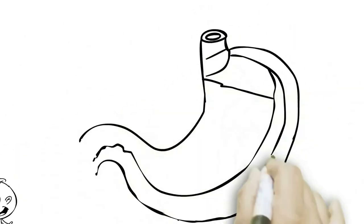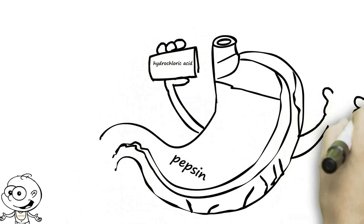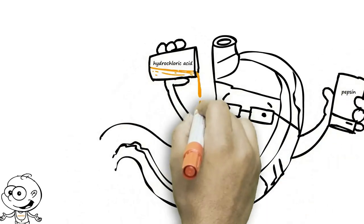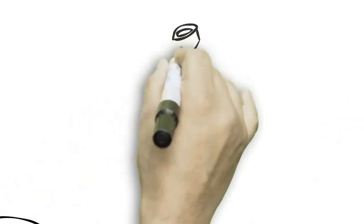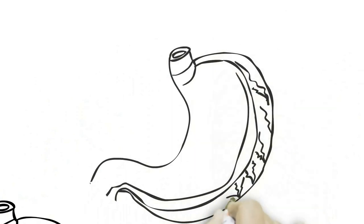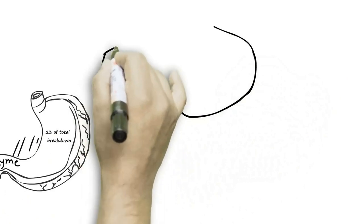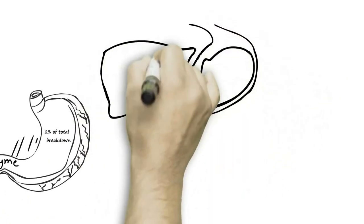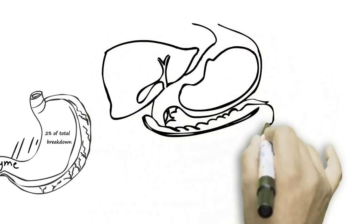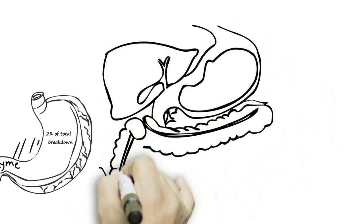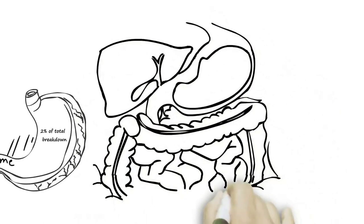When protein enters the stomach, it is bathed in hydrochloric acid and pepsin which begin the process of digestion. There is no protein absorption and only about two percent of the necessary breakdown occurs in the stomach. The stomach is where the surface peptide bonds are broken and the entire mass is stirred into chyme that is suitable for entrance into the duodenum, the origin of the small intestine.